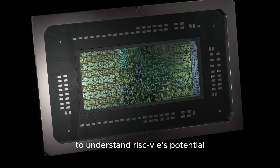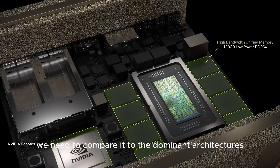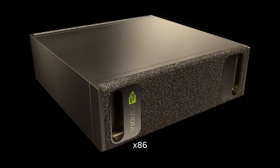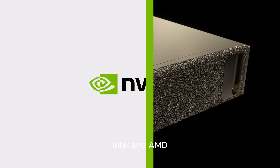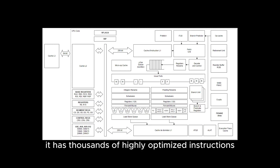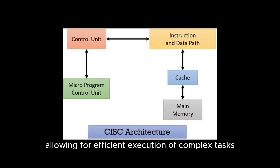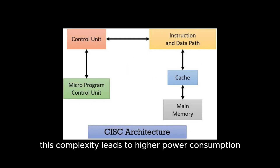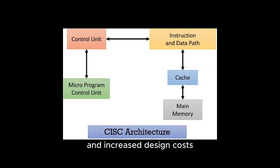To understand RISC-V's potential, we need to compare it to the dominant architectures. x86 is a Complex Instruction Set Computing, or CISC, architecture. It has thousands of highly-optimized instructions, allowing for efficient execution of complex tasks. However, this complexity leads to higher power consumption and increased design costs.